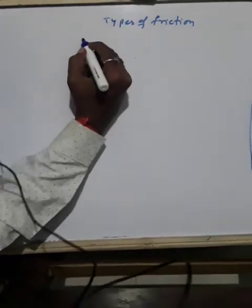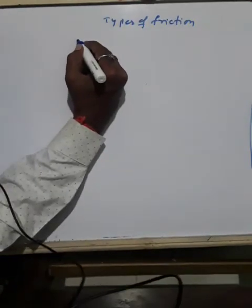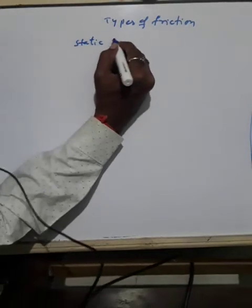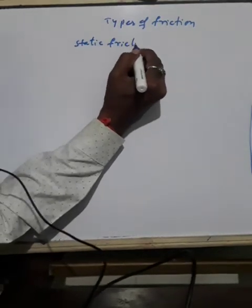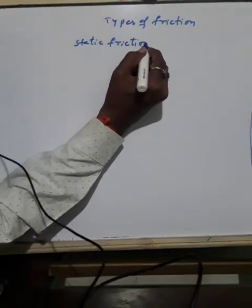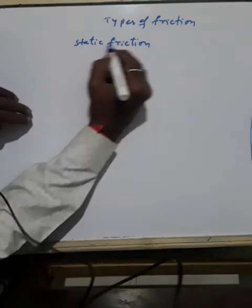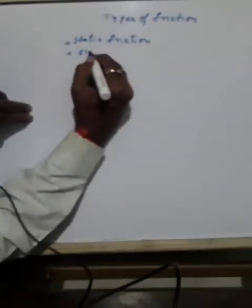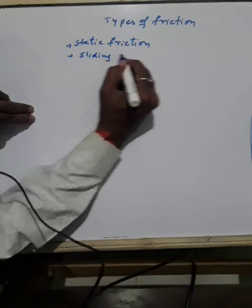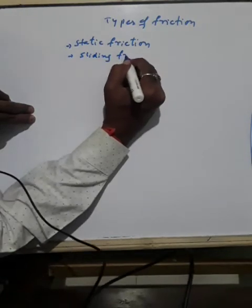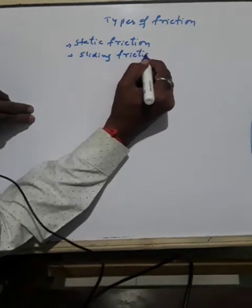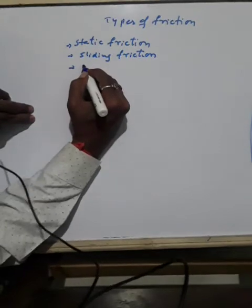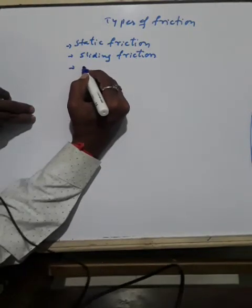There are three types of friction. The first is static friction. The second is sliding friction. And the third type is rolling friction.